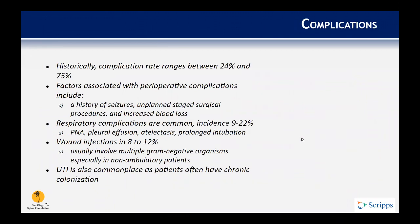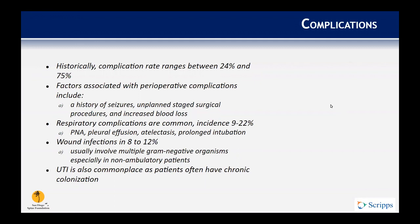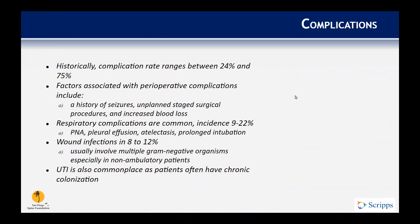Historically, the complication rate for neuromuscular scoliosis surgery has been noted between 24% and 75%. Factors associated with perioperative complications include a history of seizures, unplanned staged surgical procedures, and increased blood loss. Respiratory complications have an incidence of 9% to 22%, most commonly pneumonia, pleural effusions, and prolonged intubation. Wound infections commonly involve multiple gram-negative organisms, and UTIs are common given chronic bladder colonization.